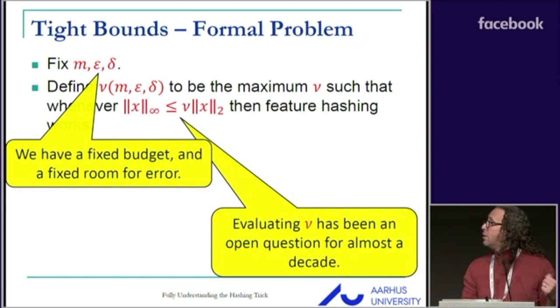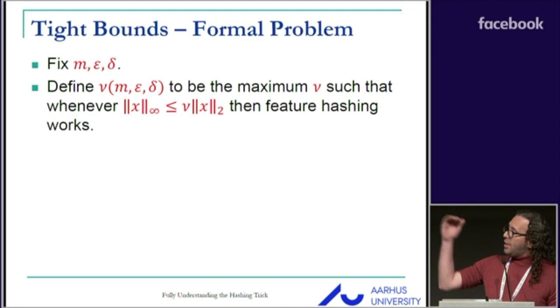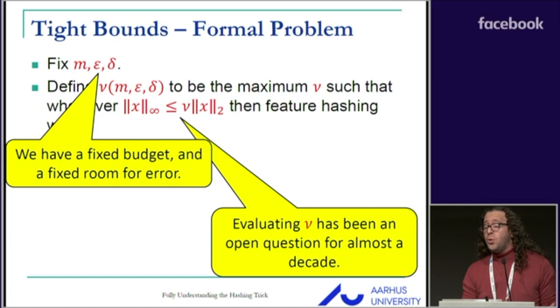Formally, suppose we have a fixed budget and a fixed room for error. We define by nu the best ratio, the largest ratio between the L infinity and the L2 norm, such that for vectors attaining this ratio, we get good guarantees from feature hashing.